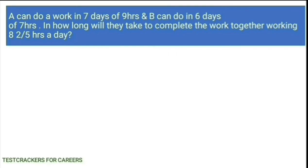A can do a work in 7 days of 9 hours and B can do it in 6 days of 7 hours. We will convert the total time taken by A into hours. That is, A works 9 hours for 7 days, so A can do the work in 63 hours and B can do the same work in 42 hours. We have to find out how long they will take to complete the work together working 8 and 2 by 5 hours a day.